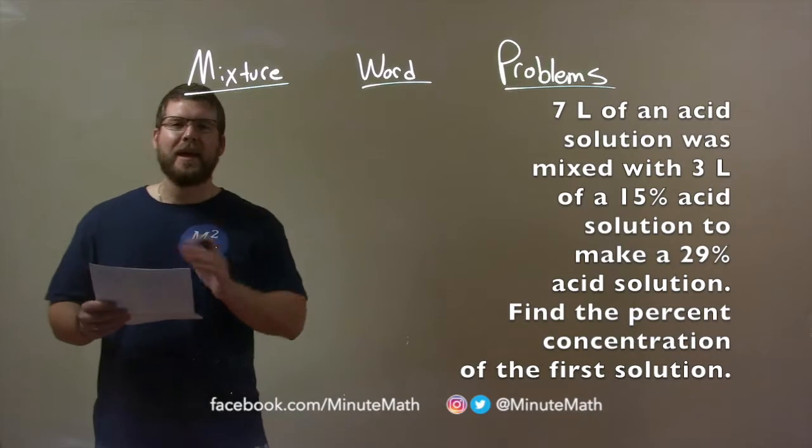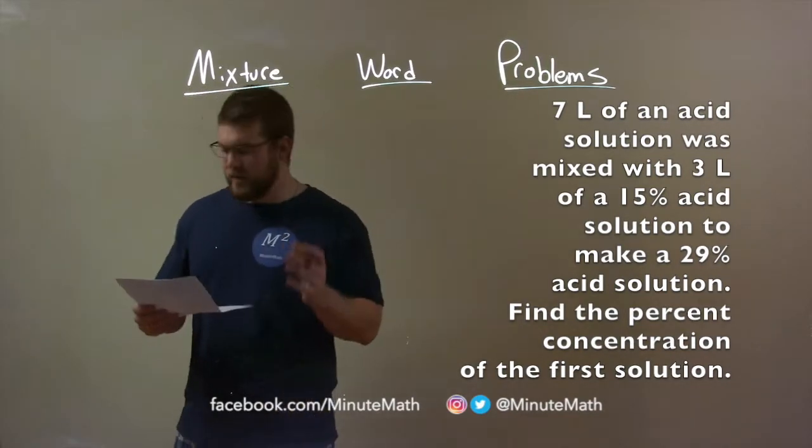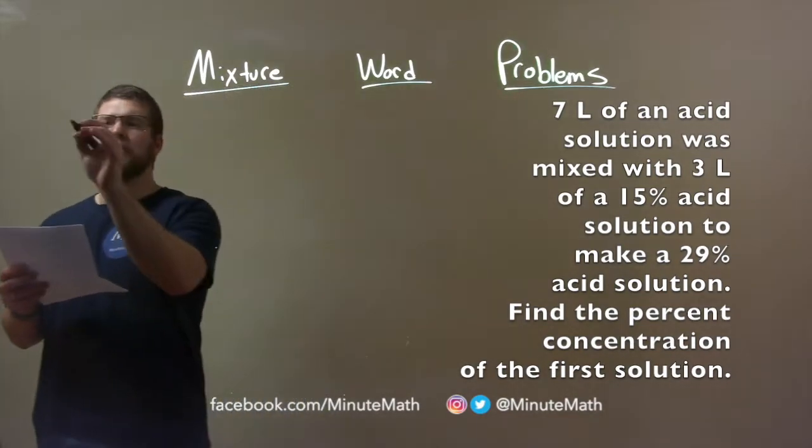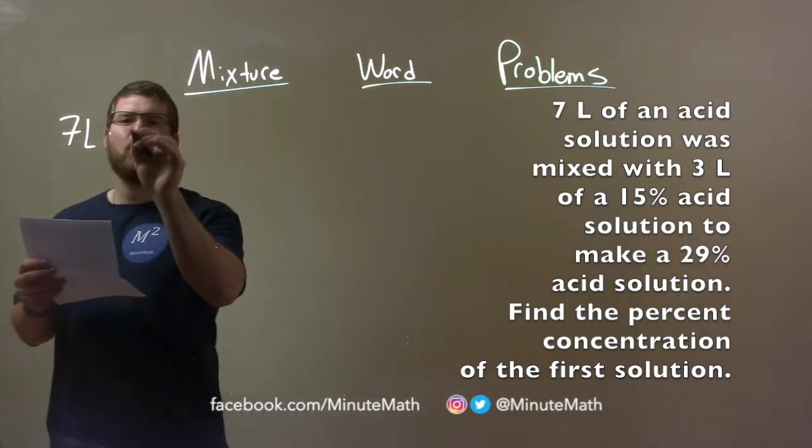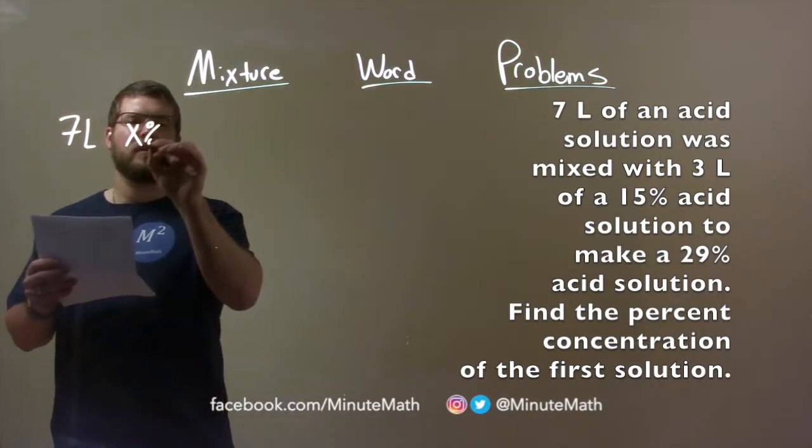So, let's make an equation out of this word problem here. We have 7 liters we're starting with, 7 liters of some solution and we don't know what percent of that is acid.